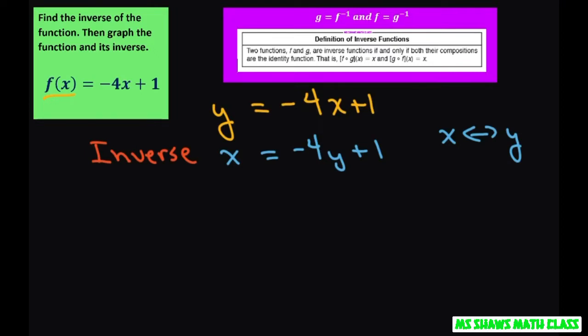We're going to subtract the 1 from both sides and divide everything by negative 4, negative 4, negative 4. So we're going to get y equals, this cancels, negative 1 fourth x plus 1 fourth.